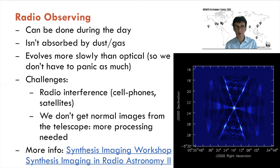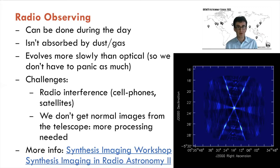But there are challenges. One of the biggest, which is only getting worse, is radio interference. A cell phone on the moon would be one of the brightest radio sources in the sky, and giant constellations of thousands of satellites are each a source of radio interference. We also don't get normal images from radio telescopes — it's not straightforward to go from what the telescope records to a good image of the sky, as illustrated by spikes extending from the central source caused by combining many individual small telescopes.